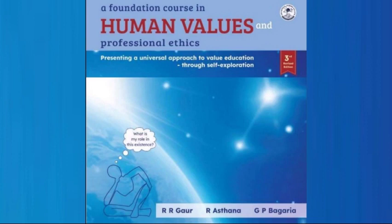This book systematically represents a series of proposals and to begin with, you explore these proposals. As you explore and verify the proposals, you are able to distinguish between what is right for you and what is not — what is valuable for you and what is not. By now, you would have been able to verify that relationship is naturally acceptable to you and opposition is not.